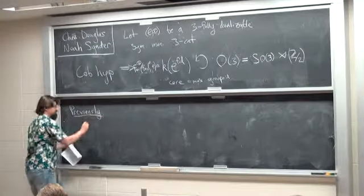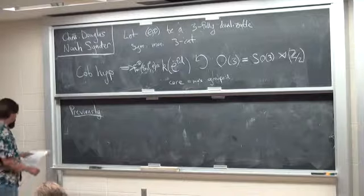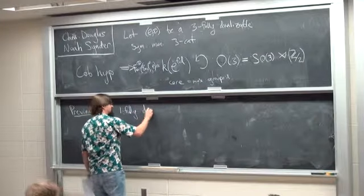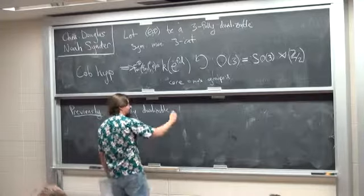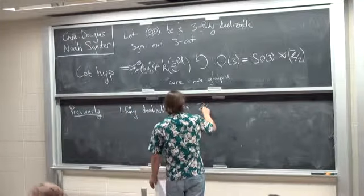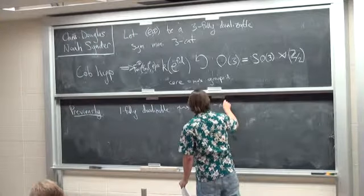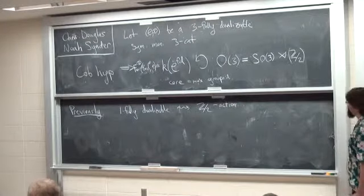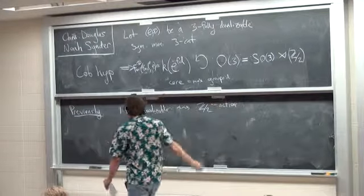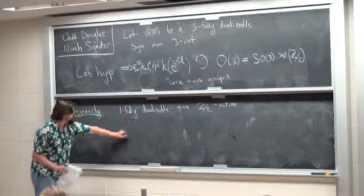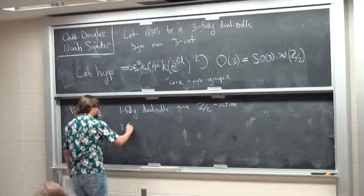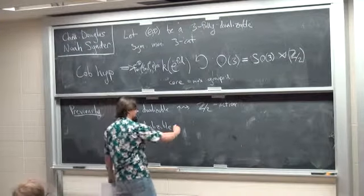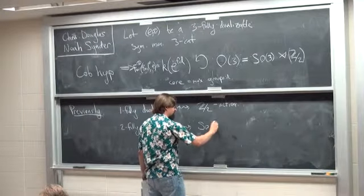Previously we saw that the one-fully-dualizable part gave rise to the Z mod 2 part of that action. We saw it on the one-categorical version. There's a three-categorical version too; you have to take into account a little bit more structure, but let's not dwell on that. If you have two layers of dualizability, then you had additional structure: we saw that in addition to the Z2 there is an SO2 action.